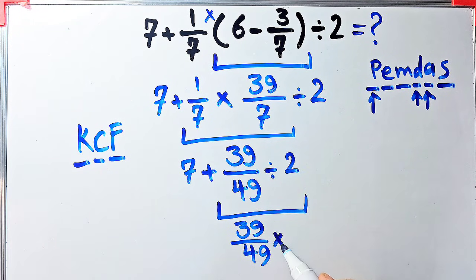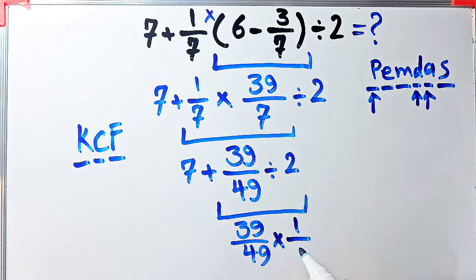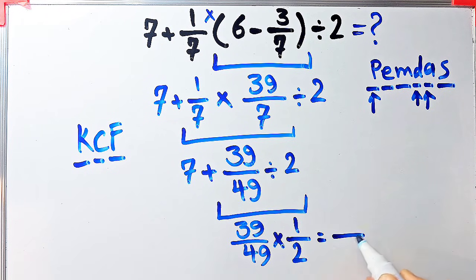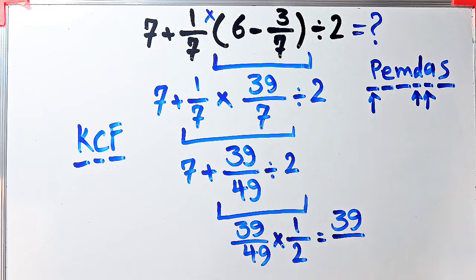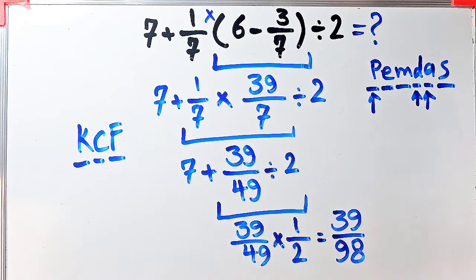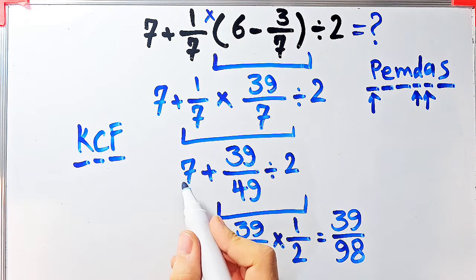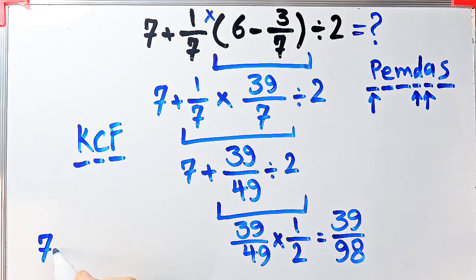We keep the first fraction as it is, then we change the division sign to the multiplication sign, and then we flip the second number. Now we have thirty-nine over forty-nine times one over two. Thirty-nine times one equals thirty-nine, and forty-nine times two equals ninety-eight. The final answer of this part equals thirty-nine over ninety-eight. Now the question is seven plus thirty-nine over ninety-eight.